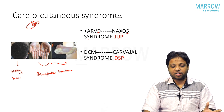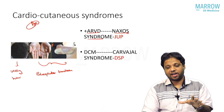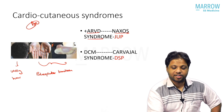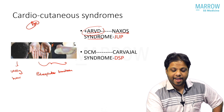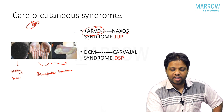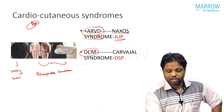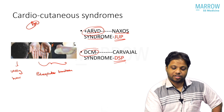Remember: Naxos has ARVD and Kavajal has DCM. The only difference is the heart manifestation. Naxos is due to junctional plakoglobin mutations and Kavajal is due to desmoplakin mutations.